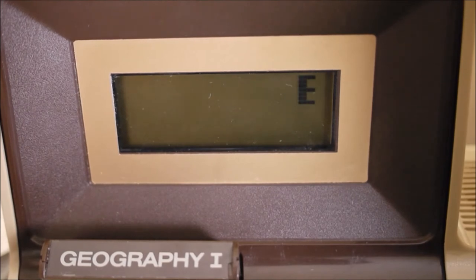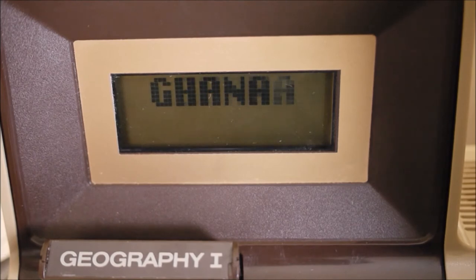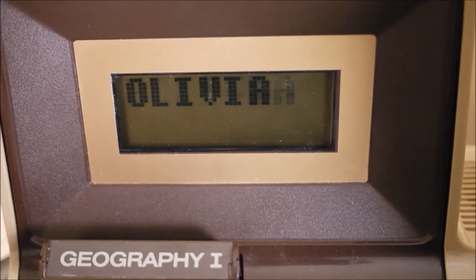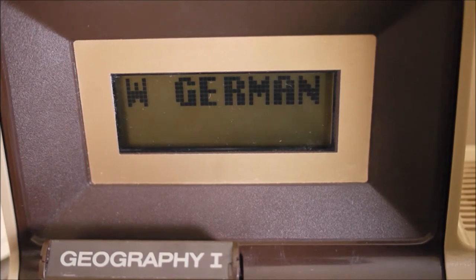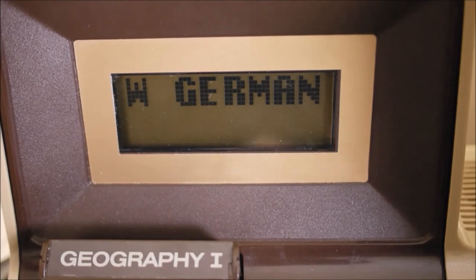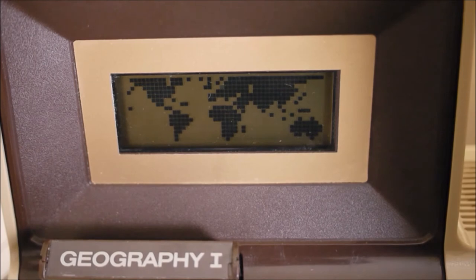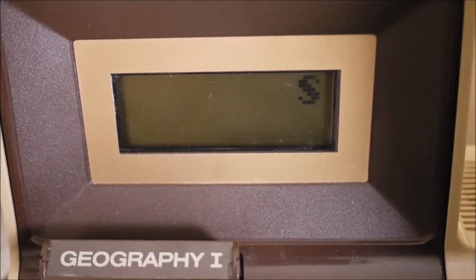Game three: Odd Nationals. I gotta read these really quick. Ecuador, Ghana, Bolivia, and West Germany. I think Germany is the odd one out, but I don't know for sure what they're basing it on. Now I gotta choose which one is the odd one out. That is correct. So that one was based on income per capita.